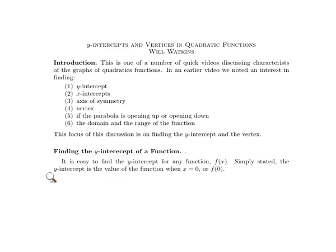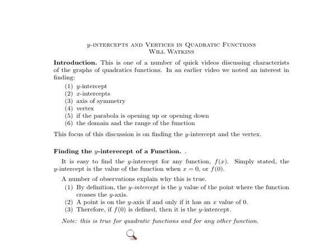Finding the y-intercept is particularly easy as it is for any function. The y-intercept will be found by picking x to be zero and just finding out what the function is at zero. By definition, the y-intercept is the y-value of the point where the function crosses the y-axis. A point is on the y-axis if and only if it has an x-value of zero, so if f(0) is defined, then it is the y-intercept. This concept works for any function.